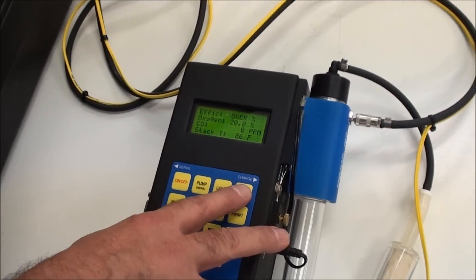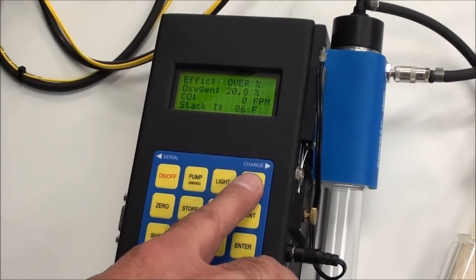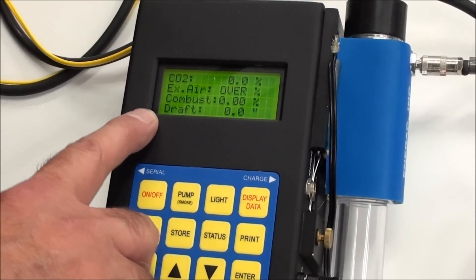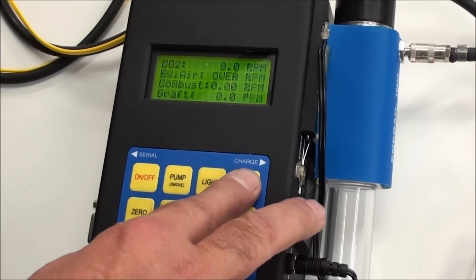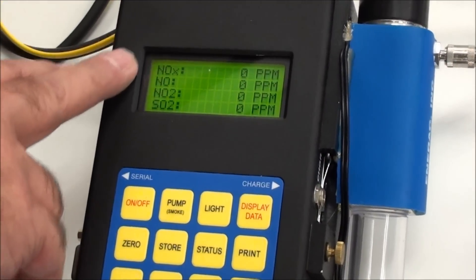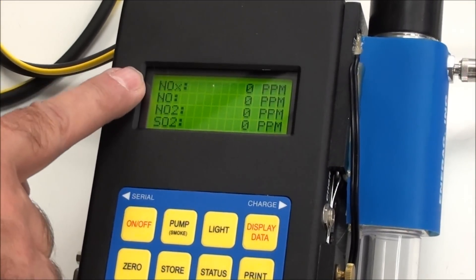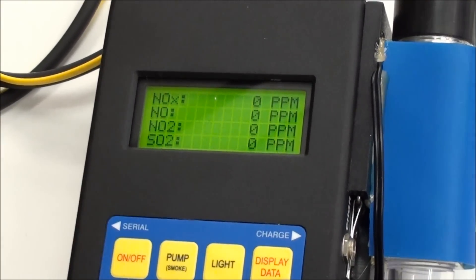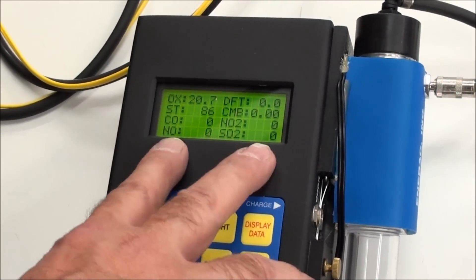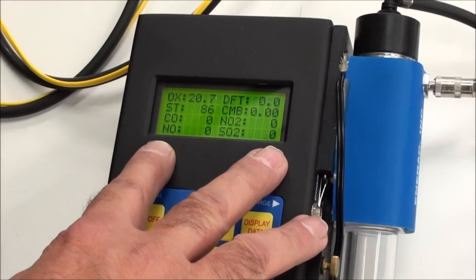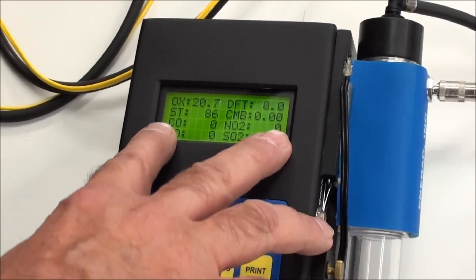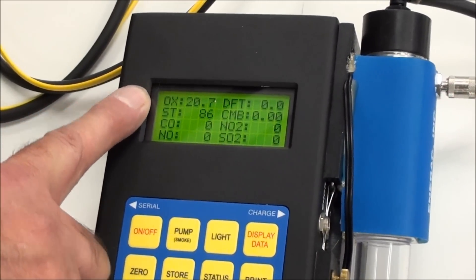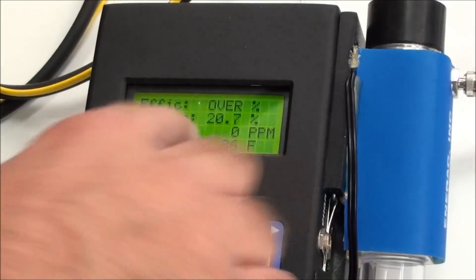Now what you'll do is you can check by simply hitting the display data button, and you toggle it through. You'll see on the second screen, you've got your CO2 excess air, combustibles, and draft. Next screen, these are your toxic sensors. The NOx is a total of the NO plus the NO2, and then you have the SO2. And the last screen is just a compilation. It gives you all the readings on one screen that you might be interested in. Shows you your toxics, your stack temp, your combustibles, your draft, and your oxygen reading. And then you hit it again. It goes back to the beginning.